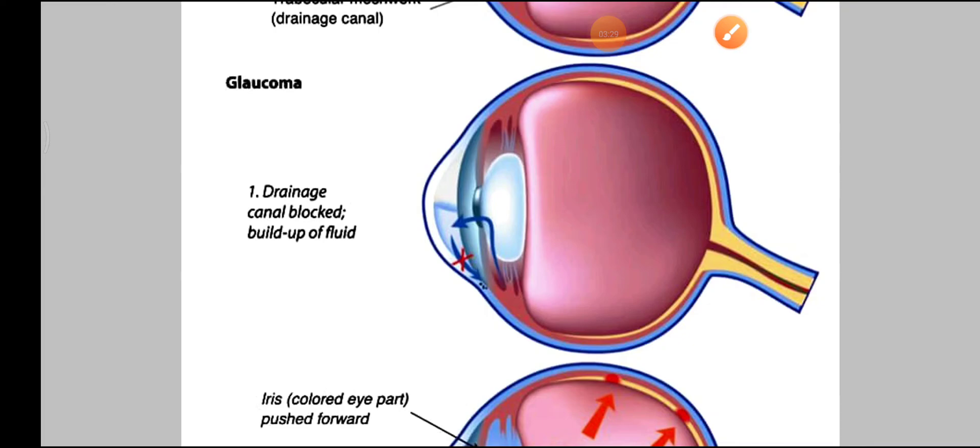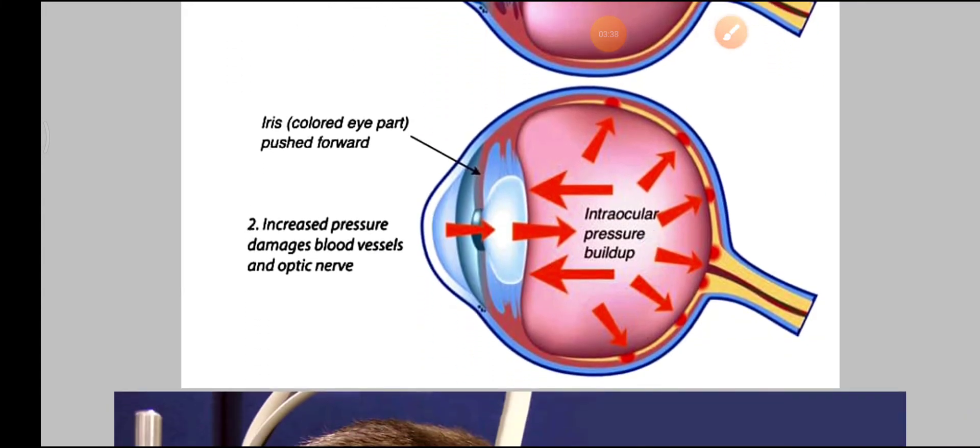If there is a blockage into the canals, then the buildup of fluid or the buildup of pressure increases, and finally we come to increased pressure. It damages the vessels and the optic nerve, so the increased IOP finally leads to blindness due to the damage to the optic nerve.